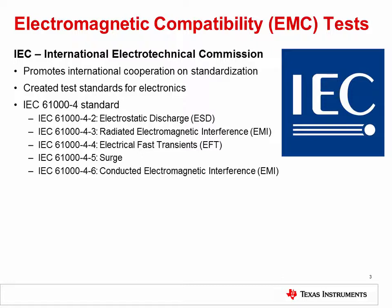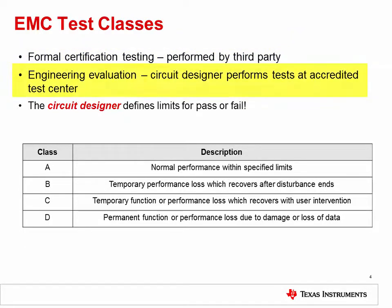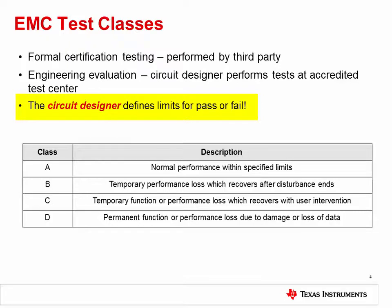In this video, we'll focus on the tests for transient energy, specifically ESD, EFT, and surge. Several types of EMC certification test methods exist. For a product to achieve official certification with the IEC, it must undergo formal testing performed by a third party. A less stringent type of testing is called an engineering evaluation, where the circuit designer performs the tests themselves. Testing is typically done at an accredited test center, which provides the standardized equipment to generate and apply the variety of transients. It's important to note that the circuit designer is able to define what limits make up a pass or fail condition.